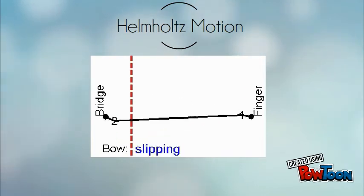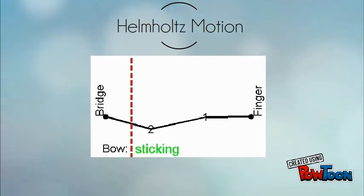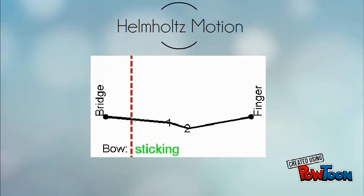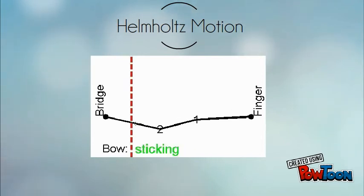As you can see, there are two corners traveling on the string and two episodes of slipping per cycle of the vibration. It will result in the same pitch as the Helmholtz motion but with a different wavelength and a different sound. The pitch is how loud it is, if you guys didn't know already.